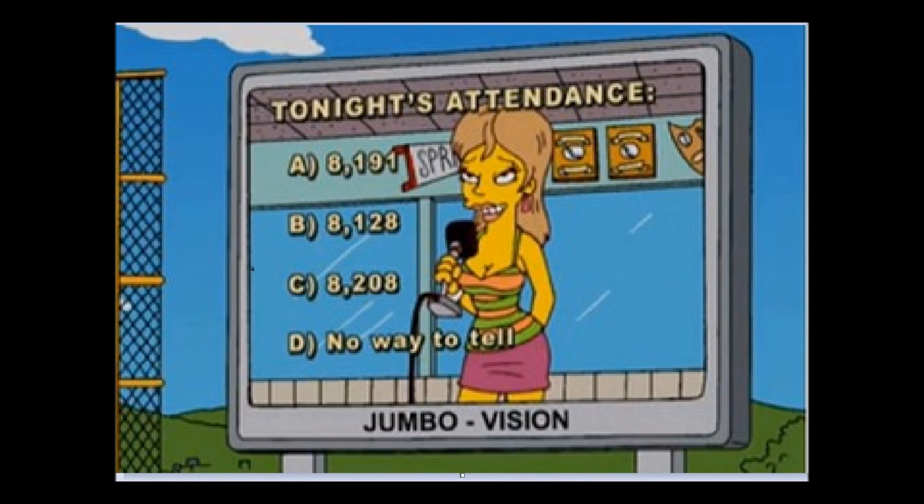Okay, so let's actually take a look at the three numbers that appear in the game. So we've got the choice of 8,191 people, 8,128 people, 8,208 people, and answer choice D, no way to tell. So again, if you're watching this, there's three numbers, but there's definitely some interesting things about those three numbers. So let's take a look at what makes these three numbers interesting and talk about where they come from in general.